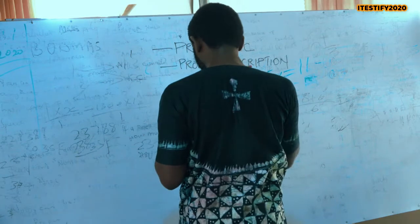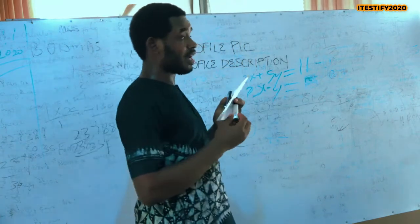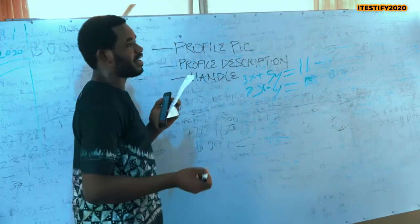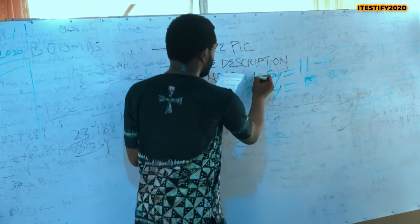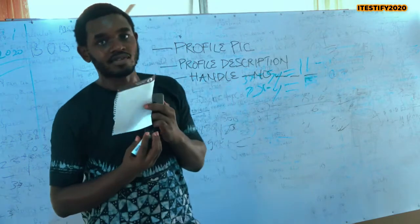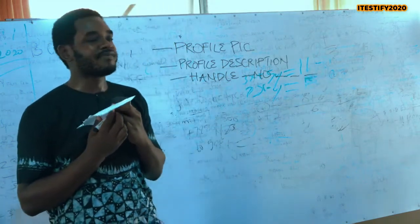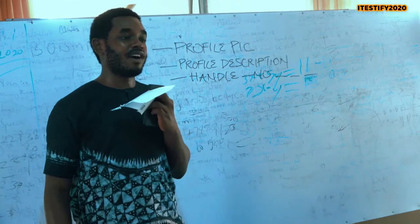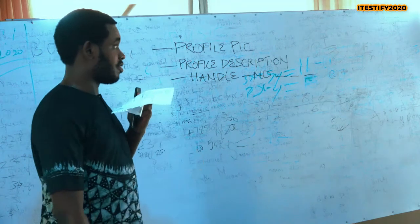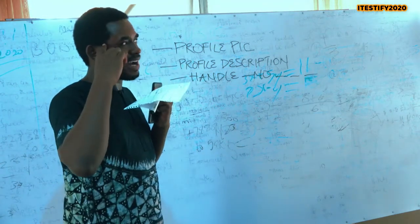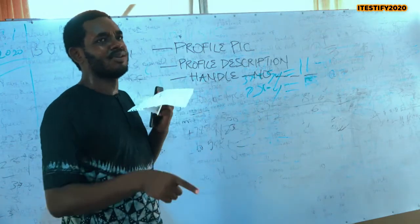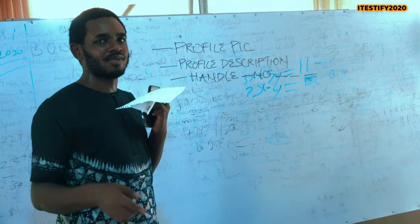The next thing is your handle. Your handle has to be your profile. I advise there should be no too many underscores — just one underscore is fine. Find a handle that is straightforward and that people can remember. You want a handle that people can just type in and it's simple. Having underscore underscore underscore multiple times is not necessary.